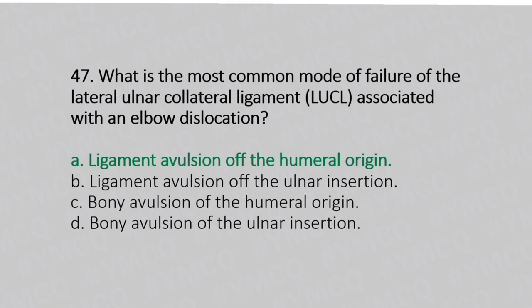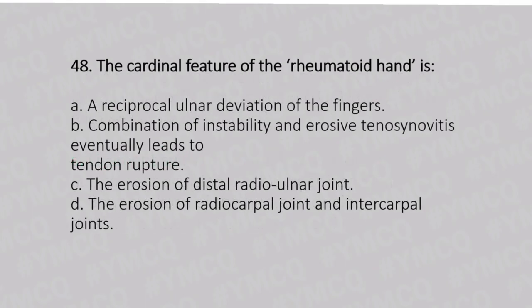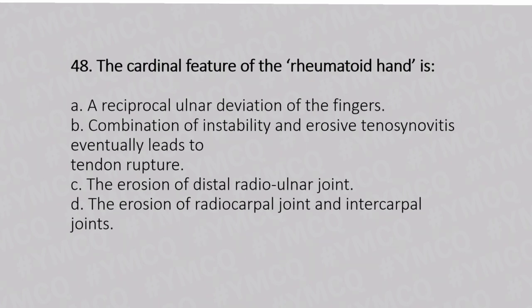Now let's move to question number 48. The cardinal feature of the rheumatoid hand is. Option A: a reciprocal ulnar deviation of the fingers. Option B: combination of instability and erosive tenosynovitis eventually leads to tendon rupture. Option C: the erosion of the distal radio-ulnar joint. Option D: the erosion of the radiocarpal joint and intercarpal joints. And the answer is Option A, a reciprocal ulnar deviation of the fingers.